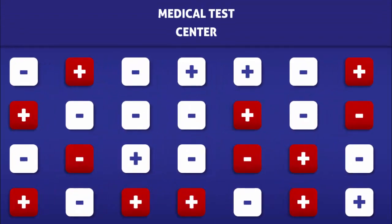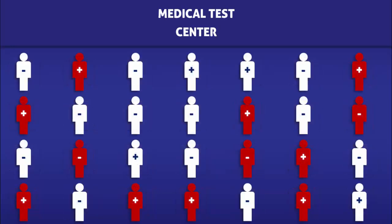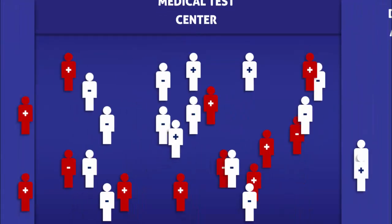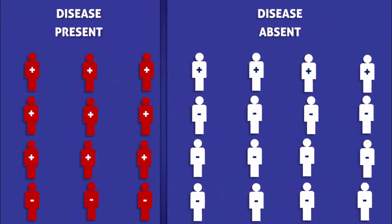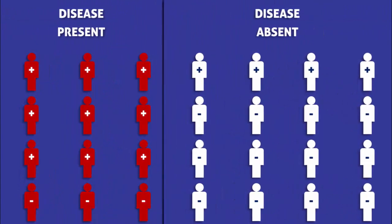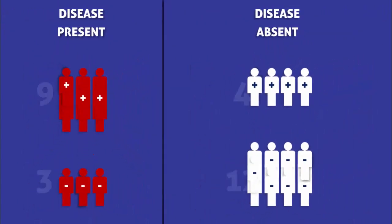In order to help us learn how to calculate the prevalence of a condition, we are going to imagine that a group of people were exposed to a risk factor. The plus signs represent those who were exposed, and the minus signs represent those who were not. The red character icons represent those who have the disease, and the white icons represent those who don't.